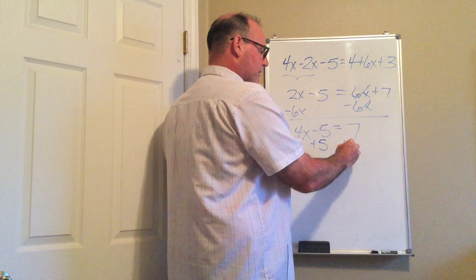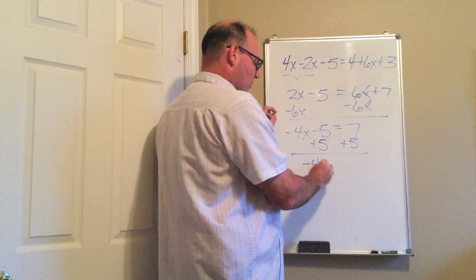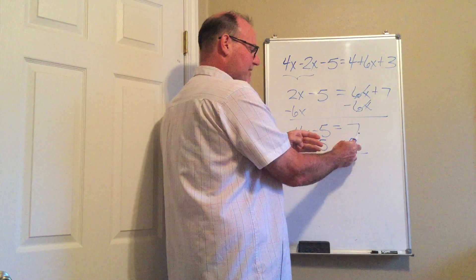Now I'm going to put the numbers on the right side. So I have negative 4x is equal to 7 and 5 is 12.